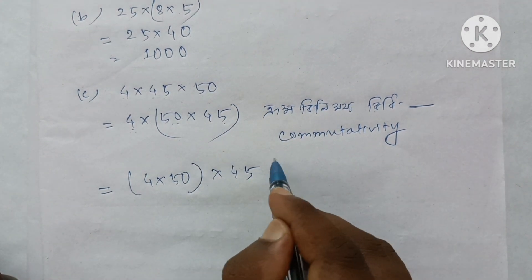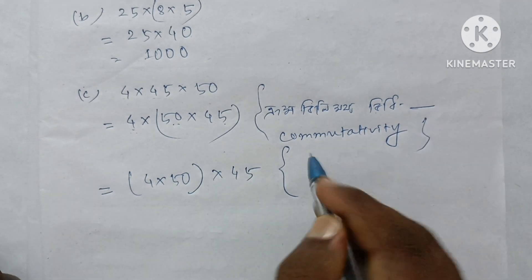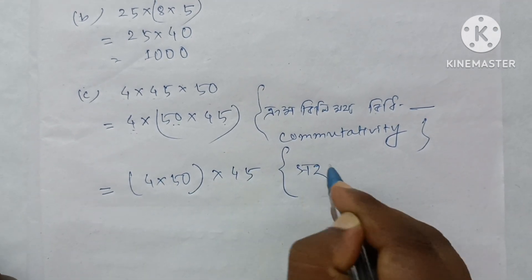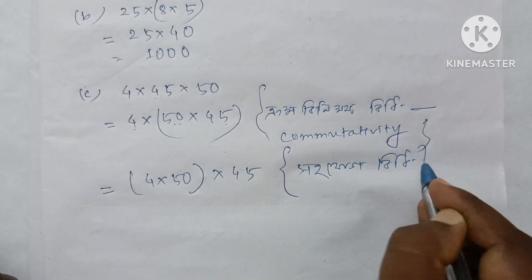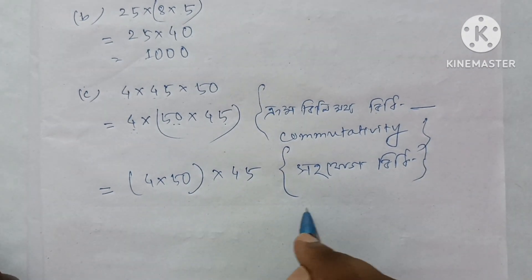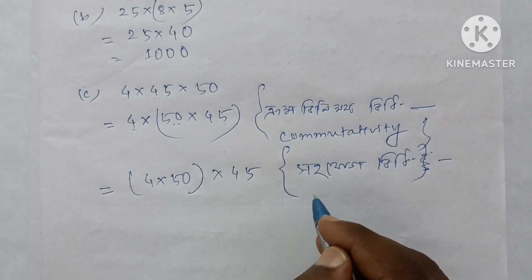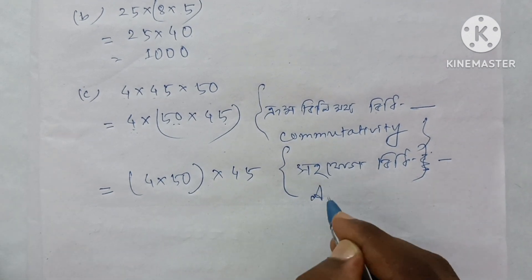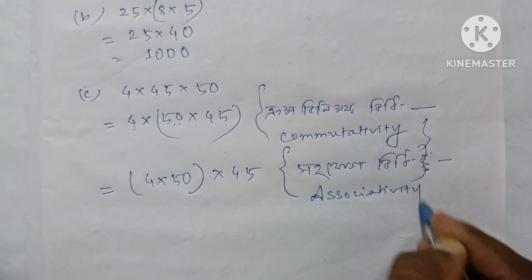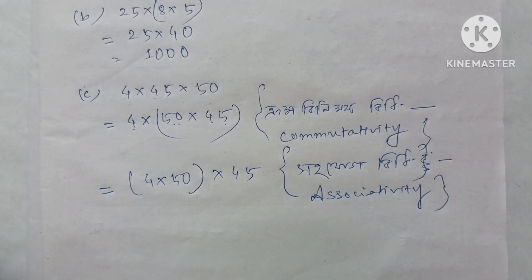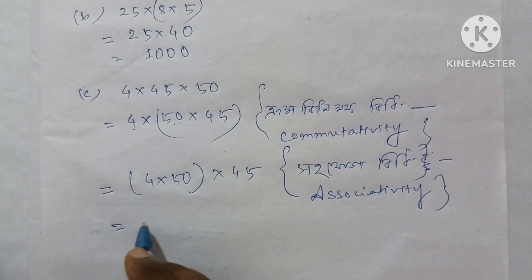This is a complete English class. You can write as a whole. Associativity — the single one.